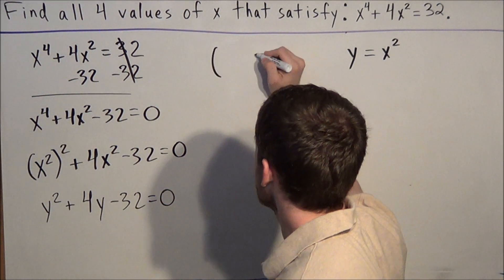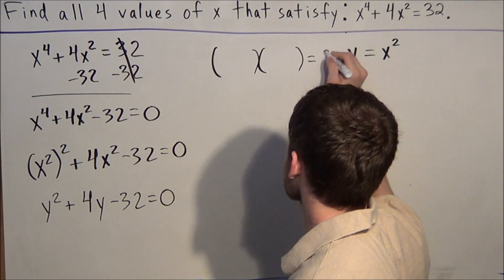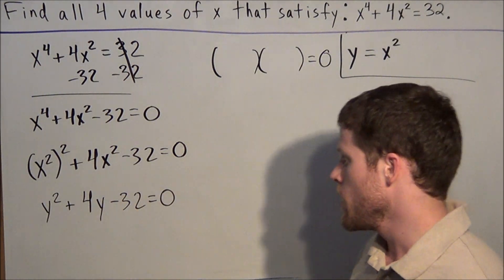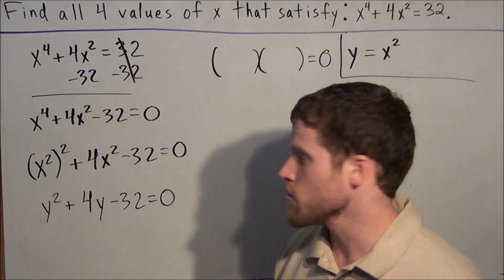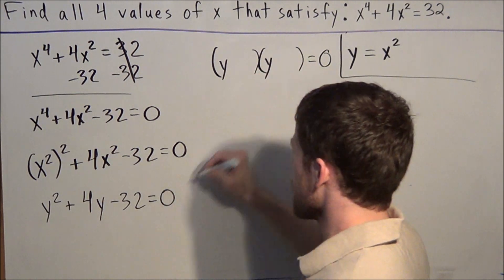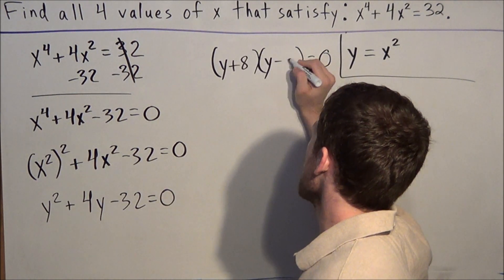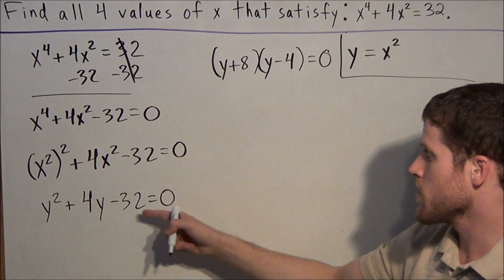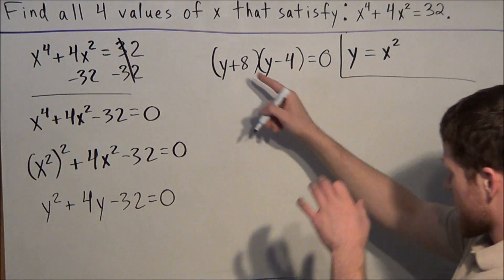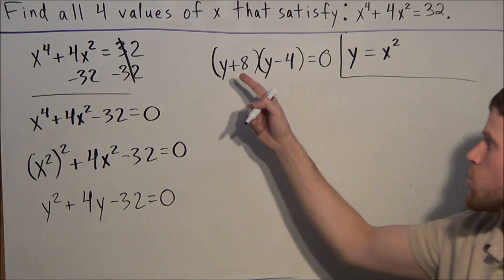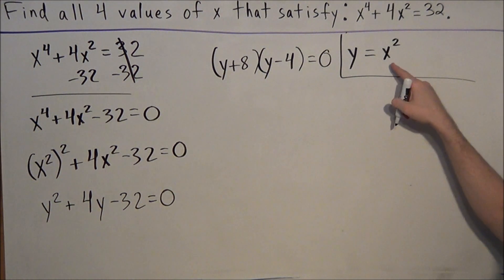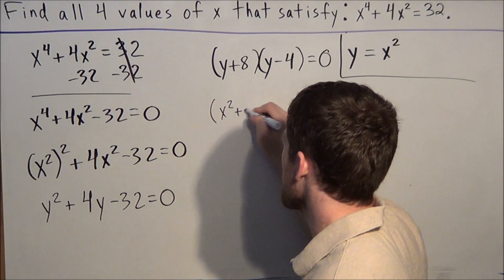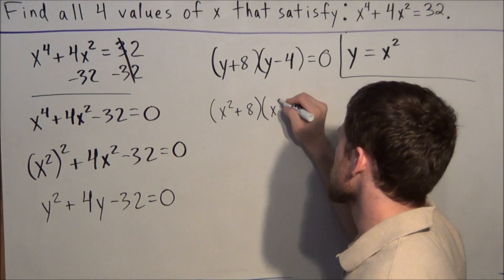We're looking for two factors such that the two numbers add to positive 4 and multiply to negative 32. Those numbers are positive 8 and negative 4. Checking: 8 plus negative 4 is positive 4, and 8 times negative 4 is negative 32. Now instead of leaving this as y plus 8 times y minus 4, we go ahead and replace y with x squared. So our factors are actually x squared plus 8 and x squared minus 4.